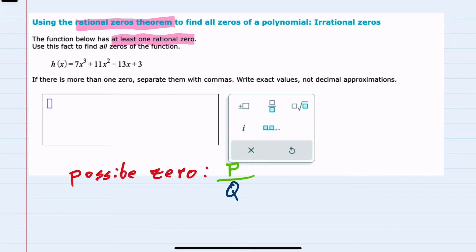Where p is the possible factors of the constant term and q is the possible factors of the leading coefficient.